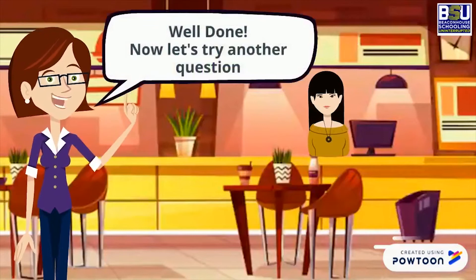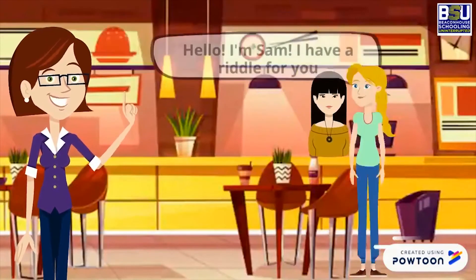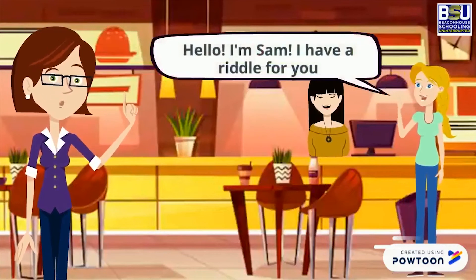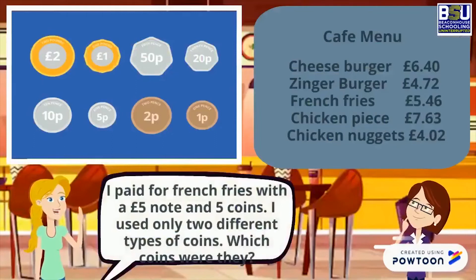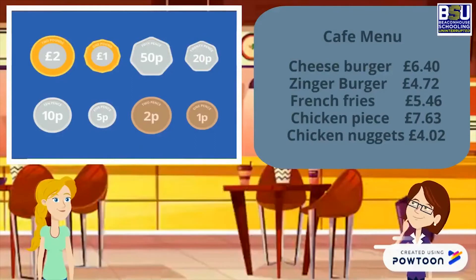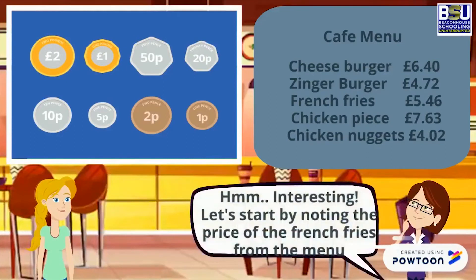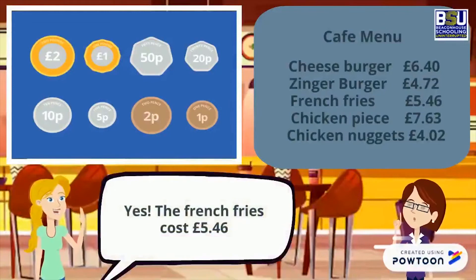Well done! Now let's try another question. Hello, I'm Sam and I have a riddle for you. I paid for french fries with a five-pound note and five coins. I used only two different types of coins — which coins were they? Let's start by noting the price of the french fries from the menu. Yes, the french fries cost 5.46 pounds.